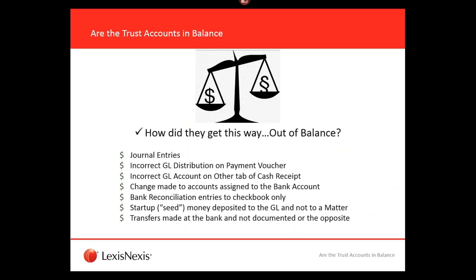How did it get like that? Journal entries — I always say no journal entries; let Juris do it. Don't correct anything with a journal entry unless it's something like payroll or accumulated depreciation. The way to correct issues in Juris is to undo the original transaction and do it over again. You can print the general ledger trial balance with details and look for anything that says 'GL/Gen Journal' — it'll stick out like a sore thumb because everything else will say 'cash receipt' or 'AP check.' Journal entries are generally the main culprit when asset and liability balances and client balances get out of balance.